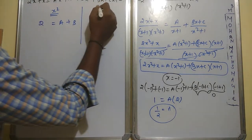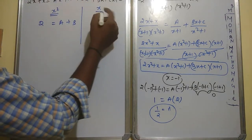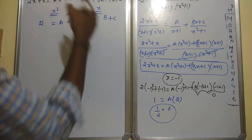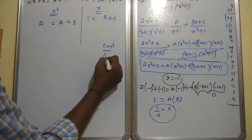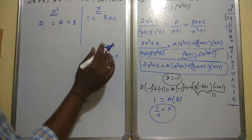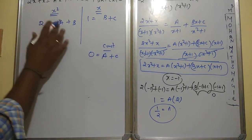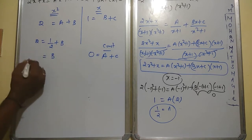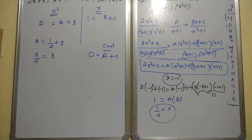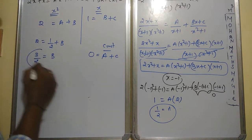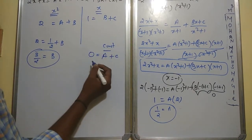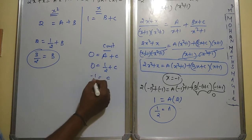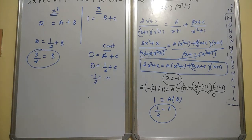Right side coefficient of x² is 2. Coefficients of x: B + C = 1. Constant terms: A + C = 0, right side is 0, left side is A + C. Now substitute A = 1/2: 1/2 + B = 2, so B = 3/2. Then from the constant equation 0 = 1/2 + C, so C = -1/2. We now have A = 1/2, B = 3/2, C = -1/2.